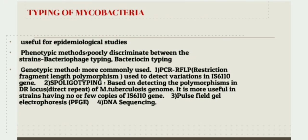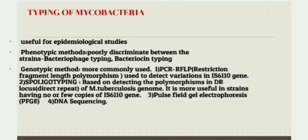Typing of mycobacteria is useful for epidemiological studies. There are phenotypic and genotypic methods. Phenotypic methods include bacteriophage typing and bacteriocin typing, but these are less popular as they poorly discriminate between strains. Genotypic methods are more commonly used and include: PCR-RFLP (polymerase chain reaction restriction fragment length polymorphism), used to detect variation in genes; spoligotyping, based on detecting polymorphism in the DR or direct repeat locus of the M. tuberculosis genome, more useful in strains with no or few copies of a particular gene; pulse field gel electrophoresis (PFGE); and DNA sequencing.